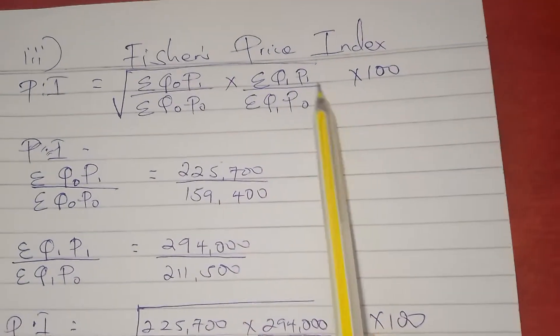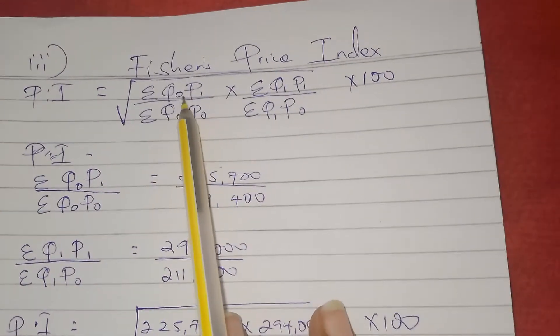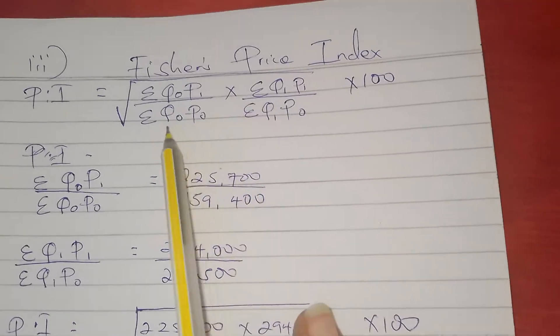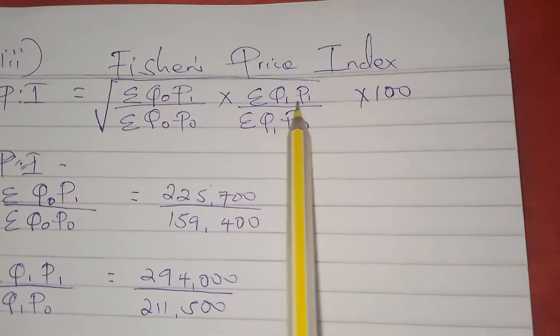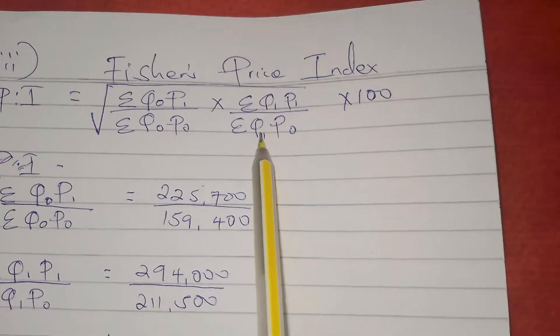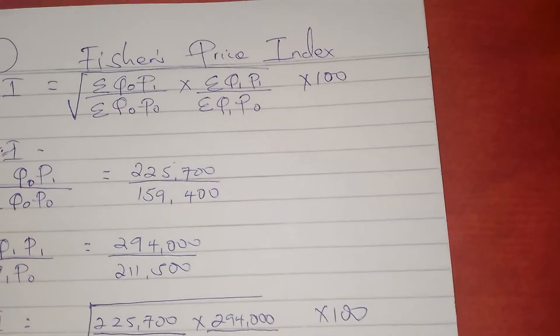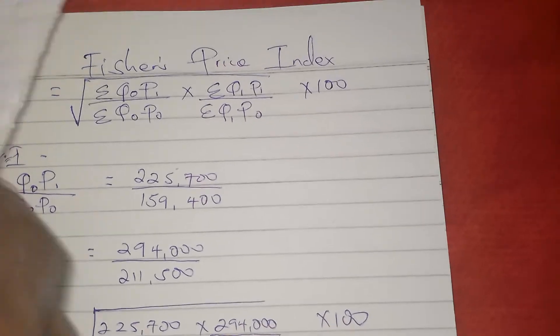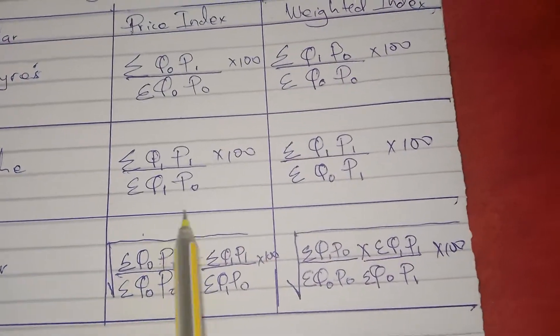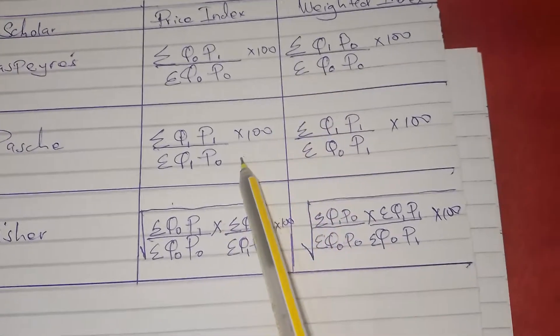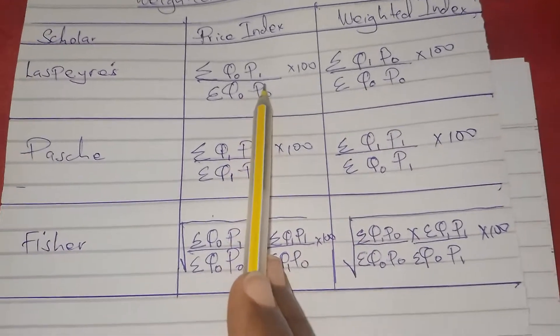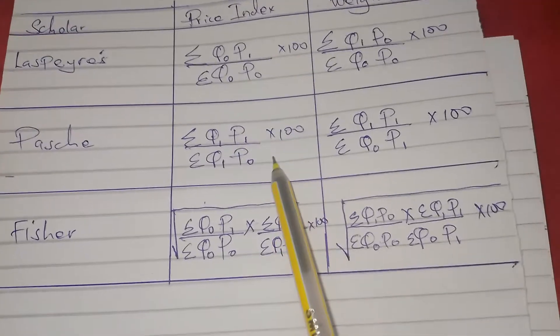Fisher's price index has this formula: summation q₀p₁ over summation q₀p₀ times summation q₁p₁ over summation q₁p₀. We looked at how we get this formula in one of the first videos. Here it is, we just combine the formula for Laspeyres price index and Paasche's price index.